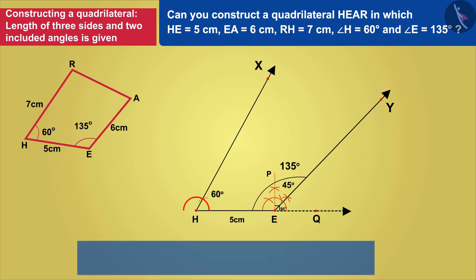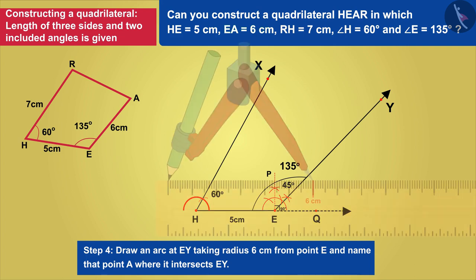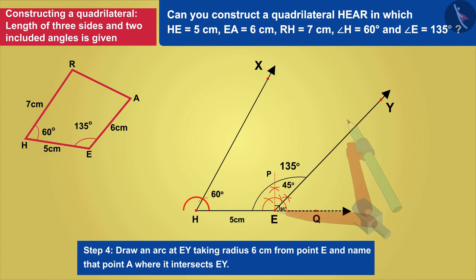Draw an arc by taking radius equal to lengths of sides given in the question. Now, here we have been given the measurement of both the sides which are adjacent to side HE. From point E, we are given EA equals 6 centimeters. So, now we will draw an arc at EY taking radius 6 centimeter from point E and give that point name A where it intersects EY.